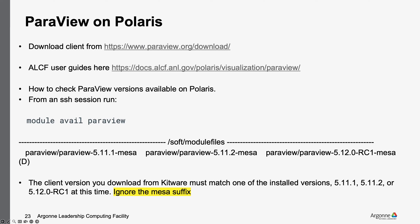ParaView and Polaris: you need to download the client first from the link provided. We also have a user guide posted at the documentation site. One of the things you can do is check the versions available, because your client must match the version you're going to use. From an SSH session on Polaris, type 'module available ParaView' and it will give you a list of available modules. For the time being, ignore the MESA suffix — that's for internal purposes. I recommend version 5.11.2 at this point. Version 5.12.0 release candidate one is available but it's not a final version, so I recommend 5.11.2.